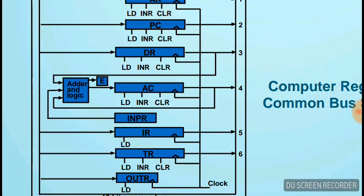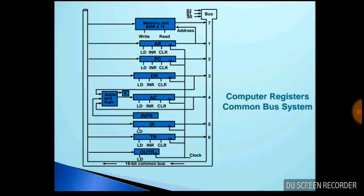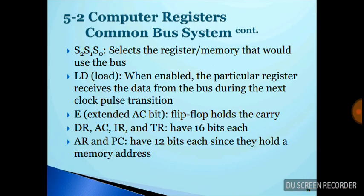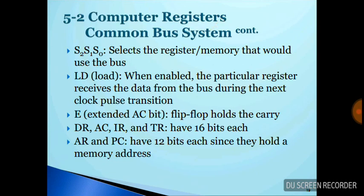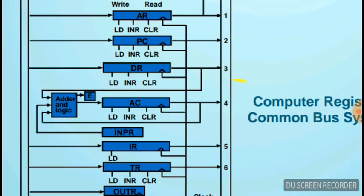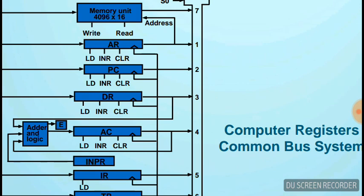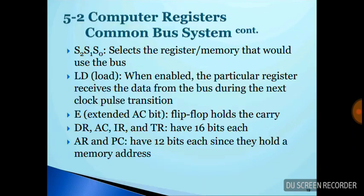For theory purposes, S2, S1, S0 are the select lines that determine which register uses the bus. Every register has three commands: load, increment, and CLR (clear). The load function enables a particular register to receive data from the bus during the next clock pulse transaction. The E flip-flop holds the carry bit.